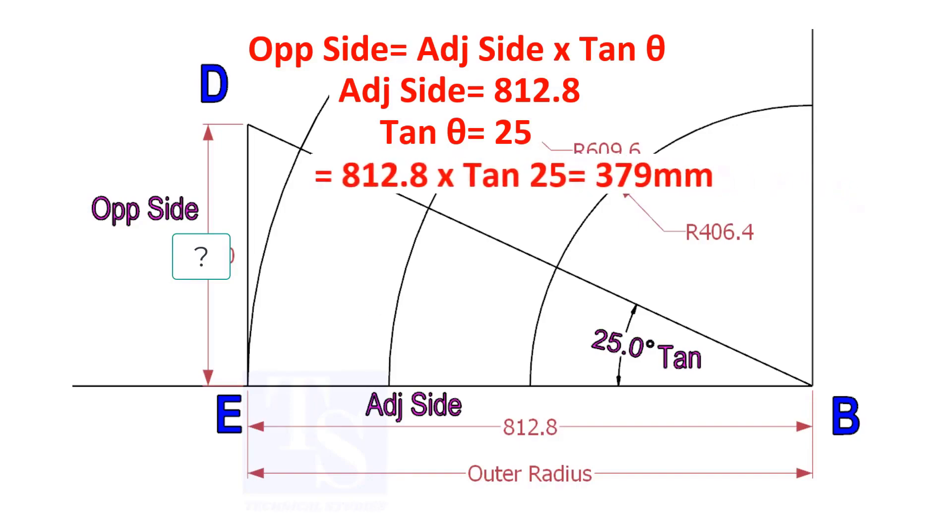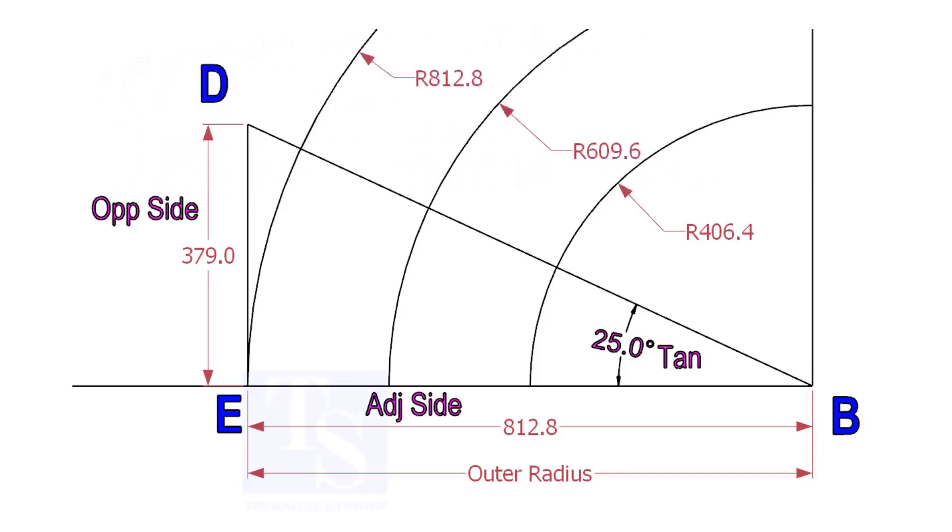812.8 into tan 25 equals 379 millimeters. Draw the line ED vertically and the slant line DB. I hope now you will be able to draw a line in any degree.